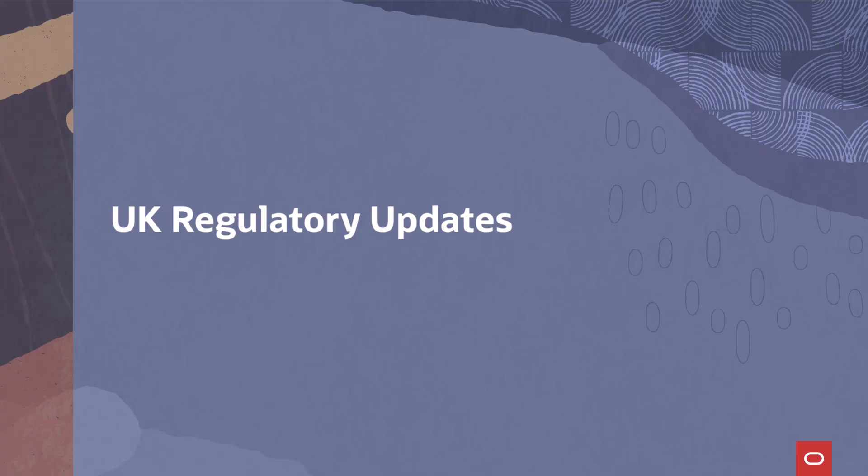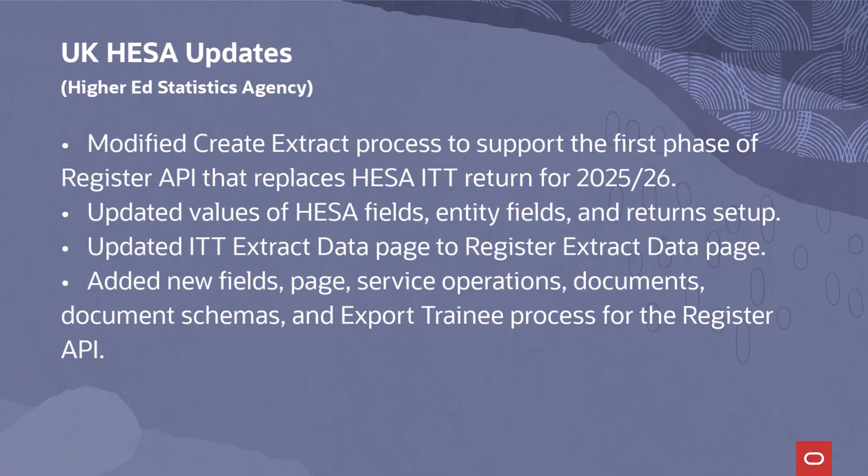For HESA, we have modified the Create Extract process to support the first phase of the Register API that replaces HESA ITT return for 2025-26. We have updated values of HESA fields, entity fields, and returns setup, and updated the ITT Extract Data page to the Register Extract Data page.